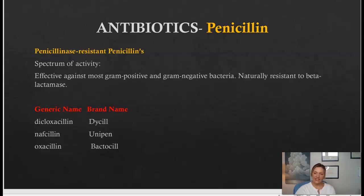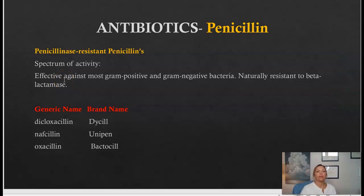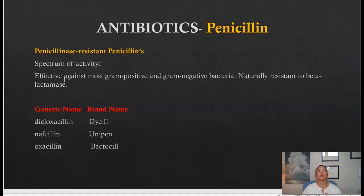The penicillinase-resistant penicillins have a spectrum of activity covering gram-positive and gram-negative bacteria, and they are naturally resistant to beta-lactamase. Common generic names are nafcillin and oxacillin — the most common ones I've seen given in the hospital, mostly administered IV. These medications are used for very serious infections.